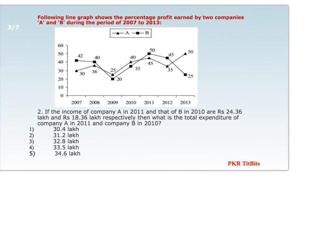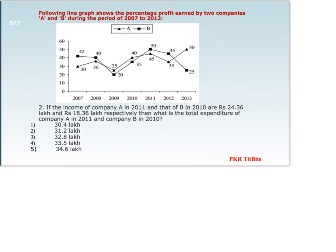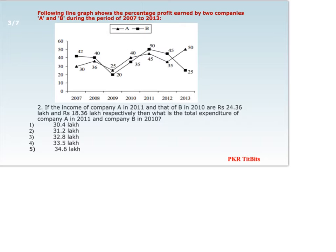Coming to the second question: if the income of company A in 2011 and company B in 2010 are 24.36 lakhs and 18.36 lakhs respectively, then what is the total expenditure of company A in 2011 and company B in 2010? Here, unlike the first question, we are given incomes and need to calculate expenditures. For company A in 2011, the profit percentage is 45%.